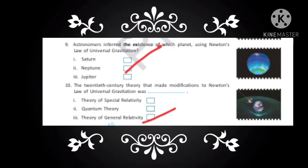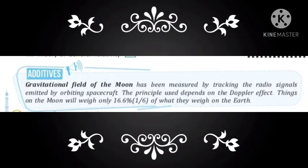Neptune was found by the astronomers using Newton's law of gravitation. The 20th century theory that made modifications in Newton's law of universal gravitation was known as theory of general relativity. So, the theory of general relativity tells us about the modification in Newton's law of gravitation.